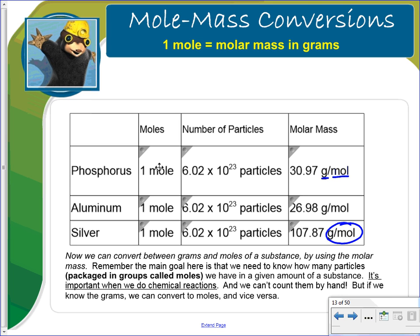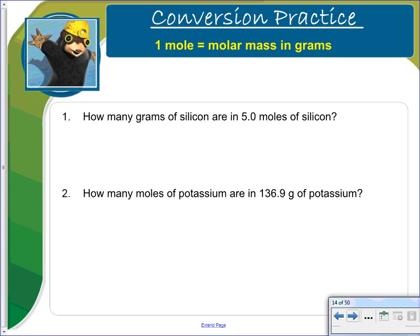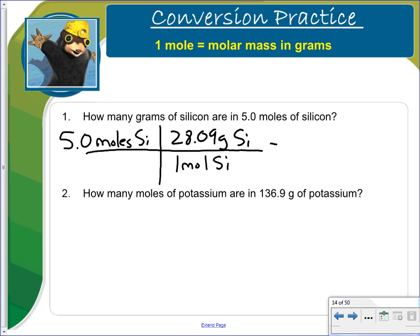Now we can convert between grams and moles of a substance by using the molar mass. Remember the main goal here is that we need to know how many particles we have in a given amount of substance. It's important when we do this later in chemical reactions. So let's work a few of these. It says how many grams of silicon are in 5 moles of silicon? So 5.0 moles of silicon. For every 1 mole of silicon has a mass and you will need to go physically look this up on your periodic table. And it's 28.09 grams of silicon. And so when we multiply 5 times 28.09, we get 140 grams of silicon.